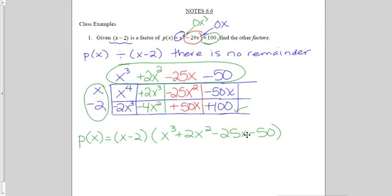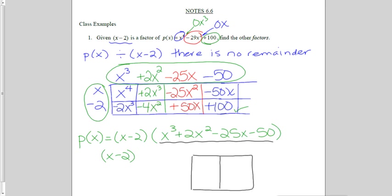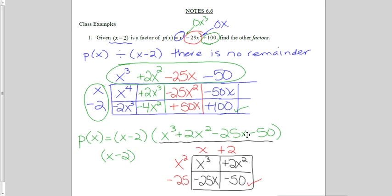I'm supposed to find the other factors, so I need to factor some more. The remaining factor has four terms, so I'm going to hope I can factor this by grouping. I should be able to put each of these four terms into a box. The GCF of the top row would be x squared. If I take that out, x times x squared would be x cubed, and over here I'd have a plus 2 to get 2x squared. On the bottom, what times x gives me negative 25x? That'd be negative 25. And as my final check, does negative 25 times positive 2 equal negative 50? Yes, it does. So I've factored some more.